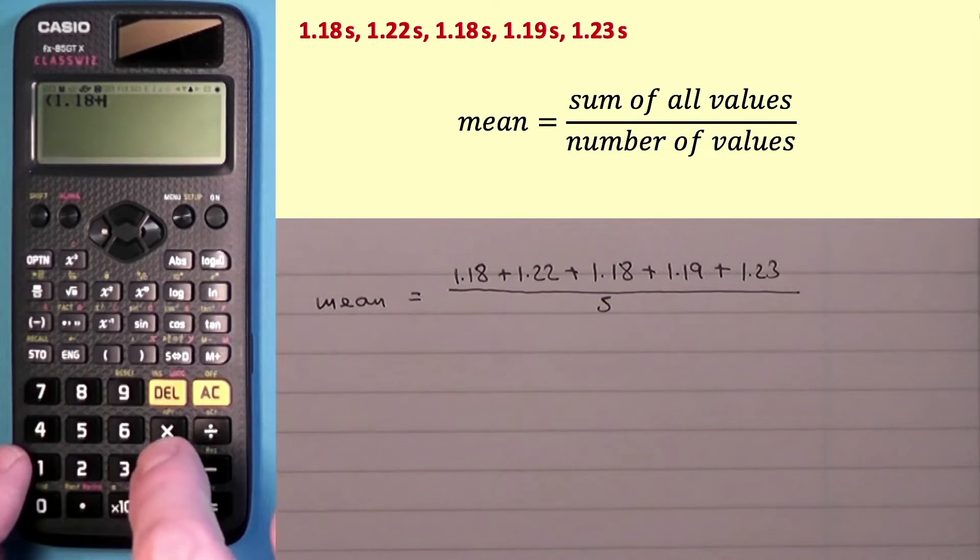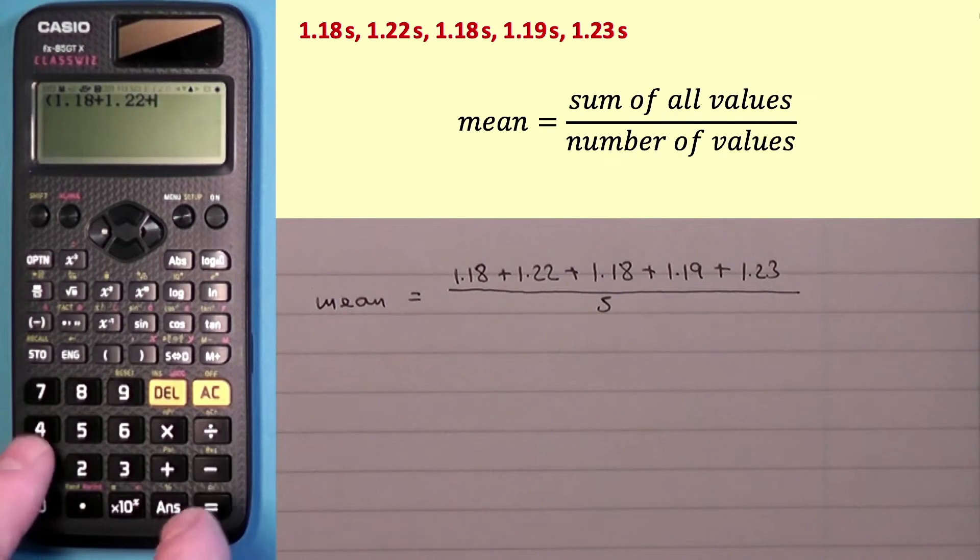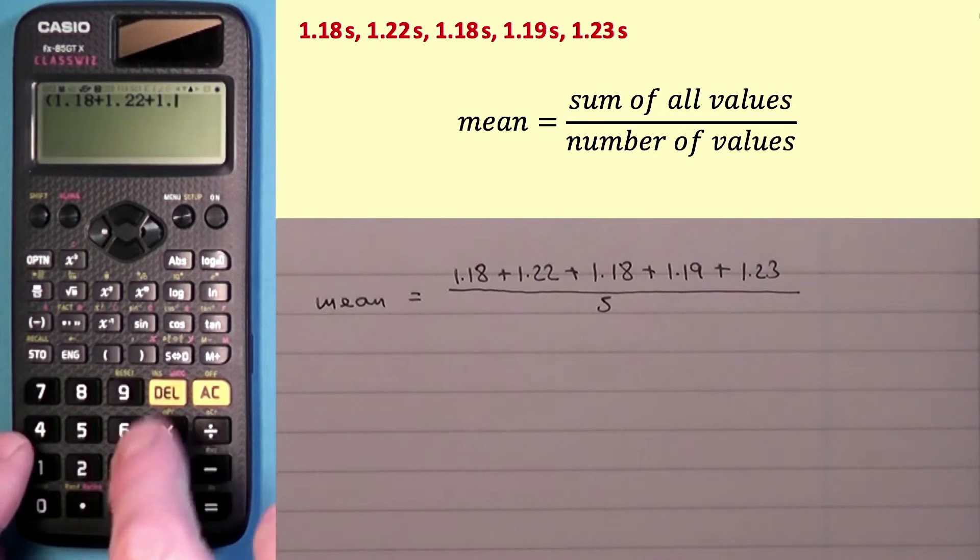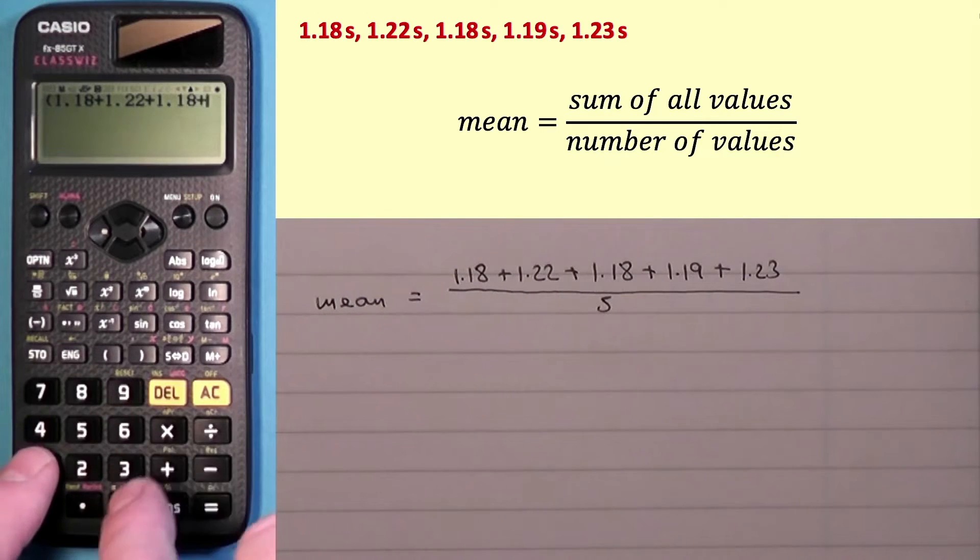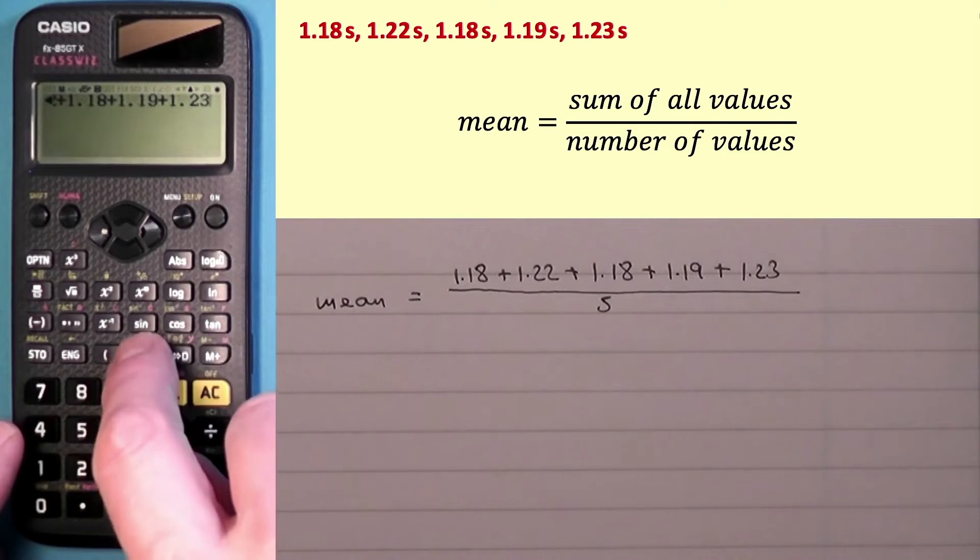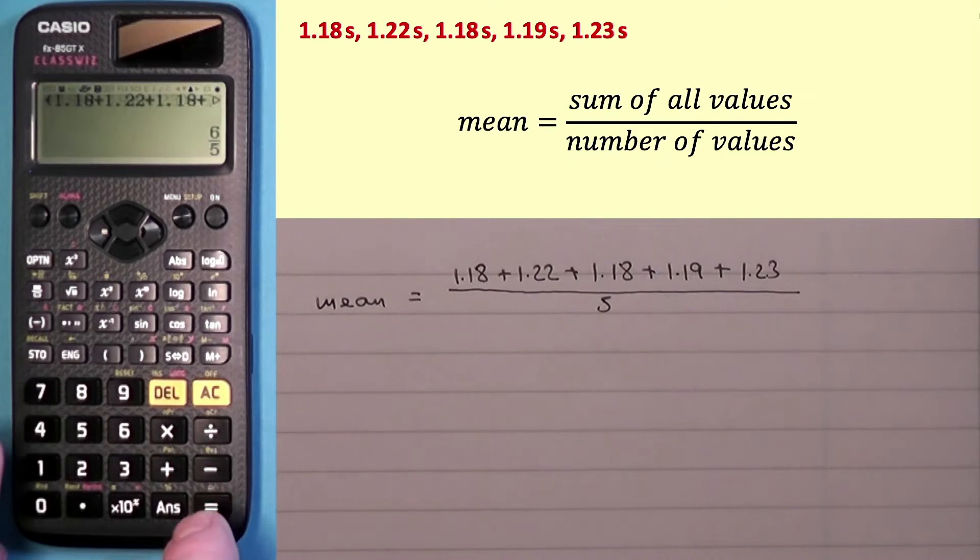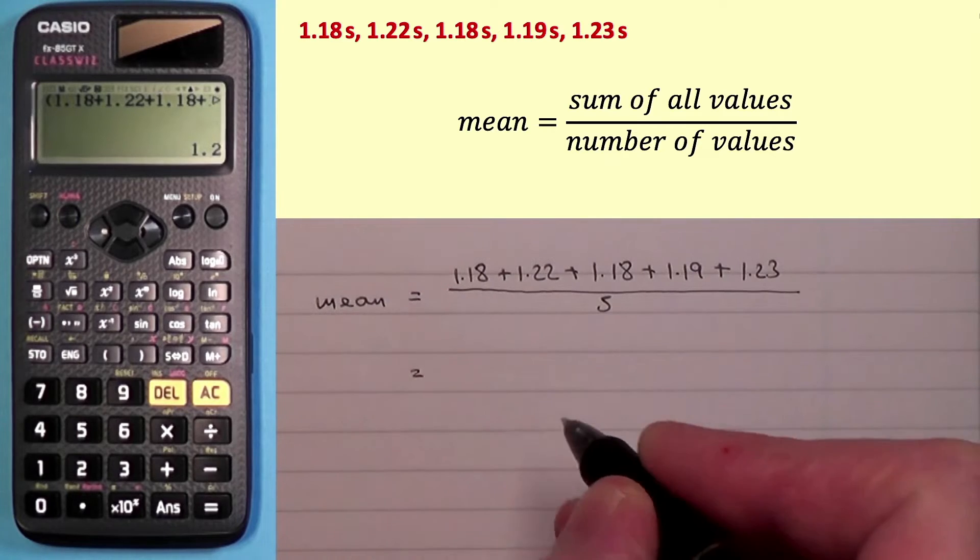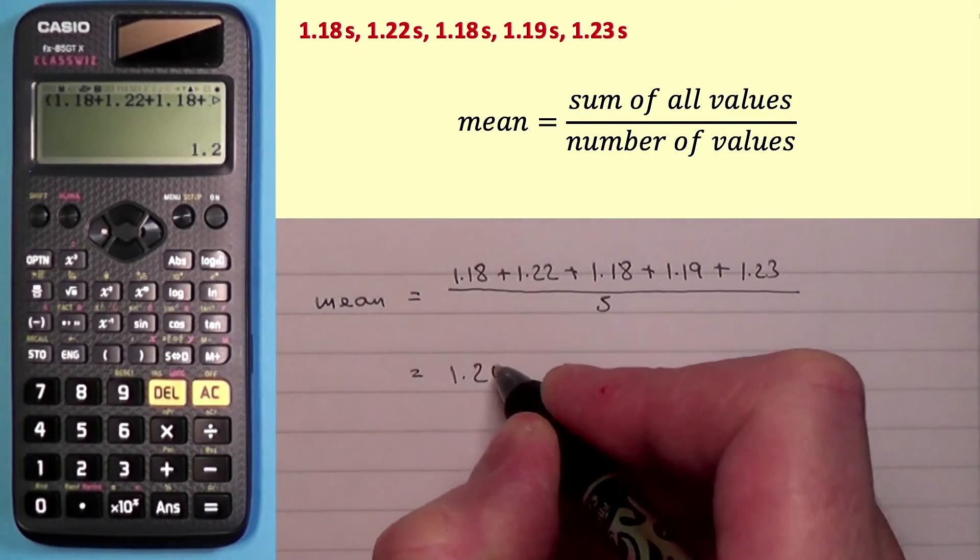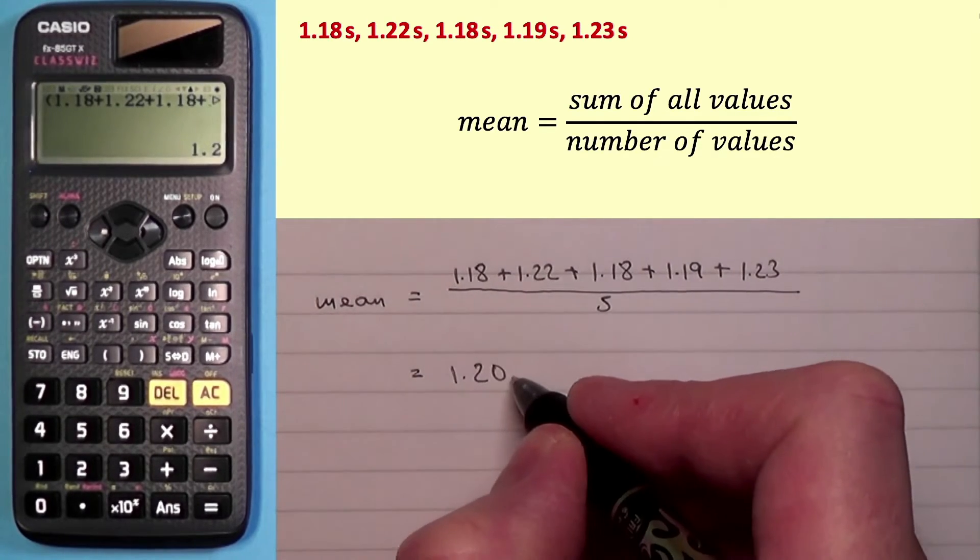So 1.18 plus 1.22, I would suggest you do the same as well. Enter these numbers in brackets. Plus 1.19 plus 1.23 close brackets divided by 5 and that gives us 6 over 5, which is 1.2. Now the important thing is that those values are written to three significant figures so I'm going to write the mean to three significant figures as well. So that's 1.20 and of course it's a time so it's in seconds.